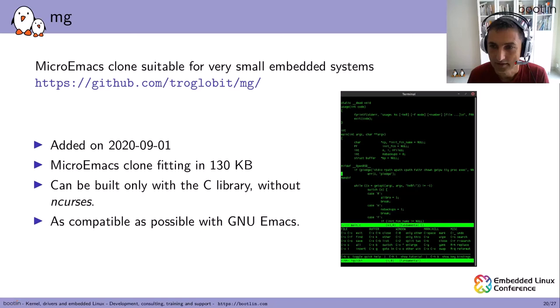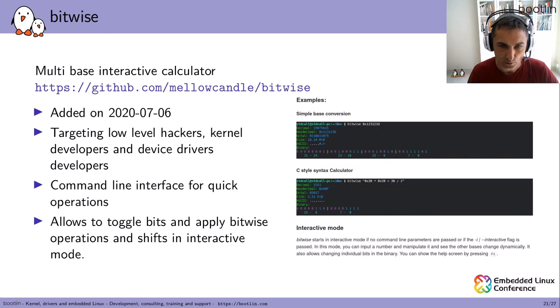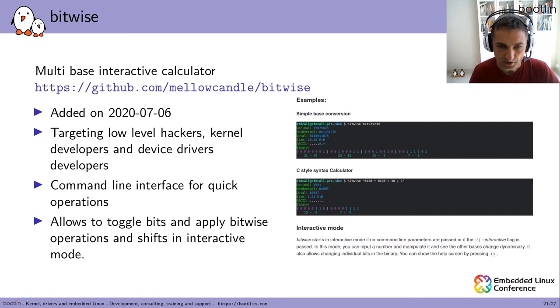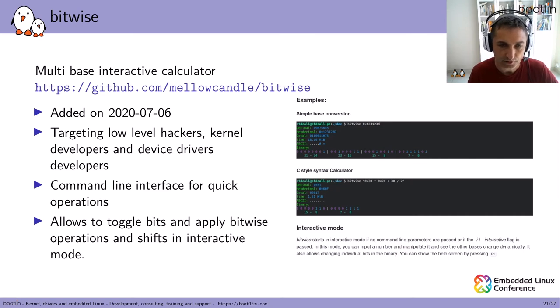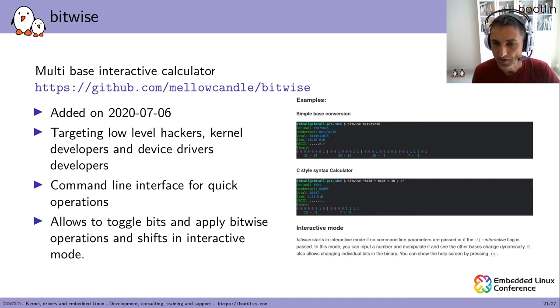The next one is called Bitwise, a multi-base interactive calculator targeting low-level hackers, kernel developers, and device driver developers. It allows you to manipulate data in multiple forms. There's a command line interface for quick operations, and an interactive mode to toggle bits and apply bitwise operations such as AND, XOR, and SHIFT. This seems great for manipulating data for use in your code.